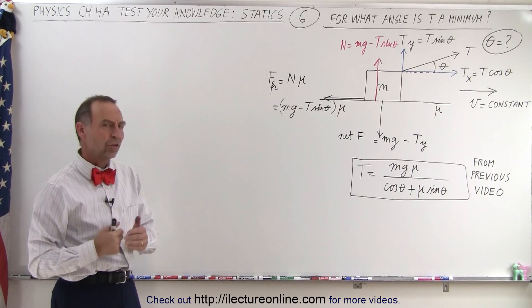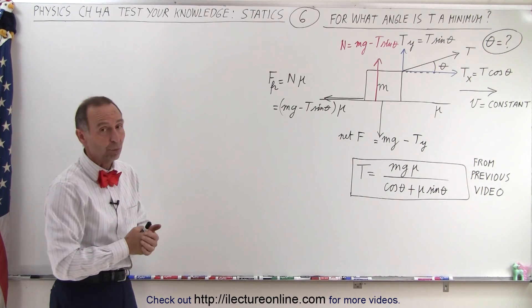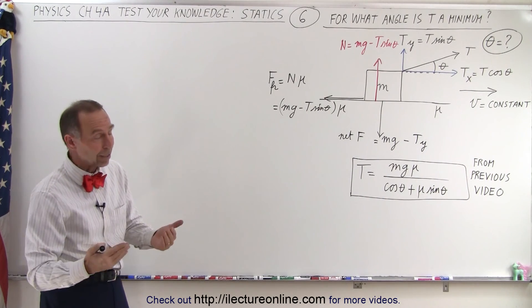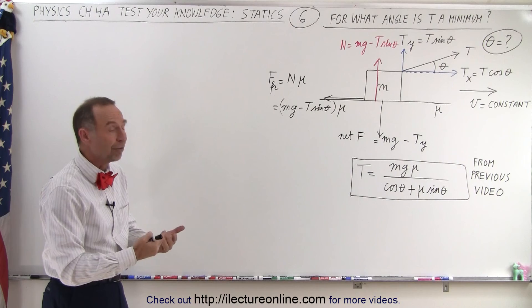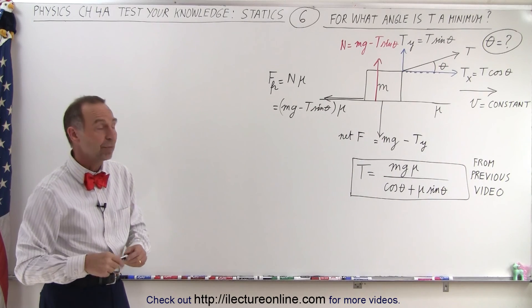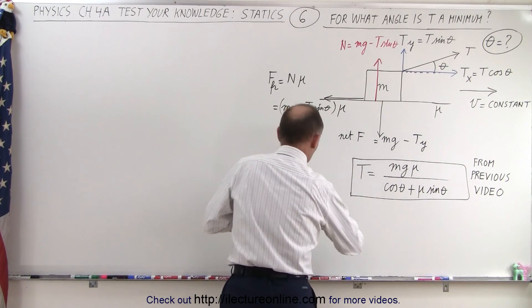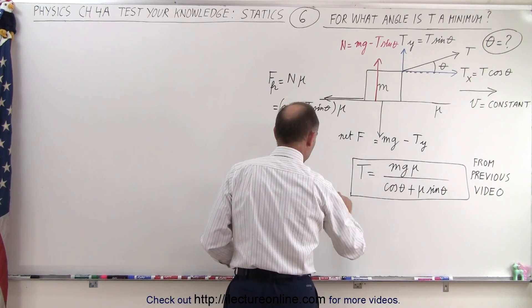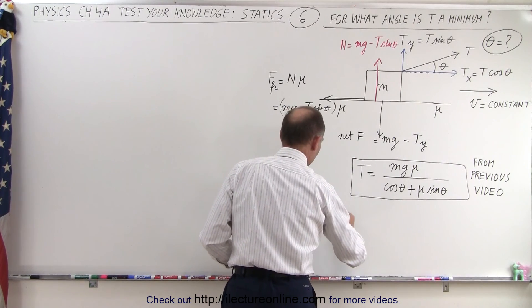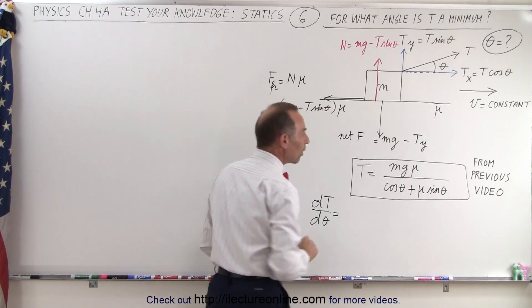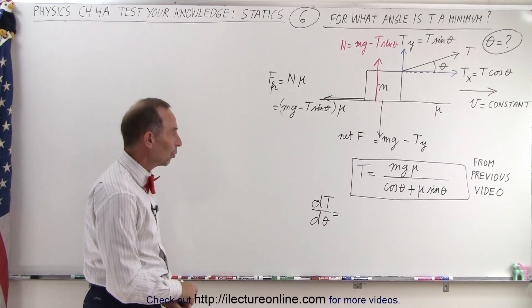The strategy here is to take the derivative of the tension with respect to the angle, and then solve for the angle that gives us the minimum tension. So what we're going to do is write dT/dθ and find an equation equivalent to that.